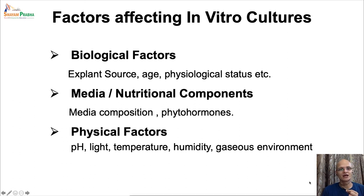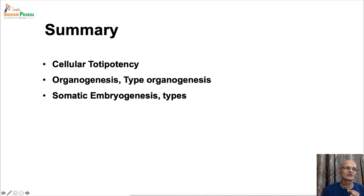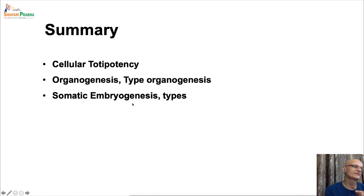That's it for today. To quickly summarize what we discussed: we covered cellular totipotency, then organogenesis — how it is established, what kinds of organogenesis exist — and then somatic embryogenesis, its establishment, and the different pathways of somatic embryogenesis. That's it for today's lecture. Thank you.